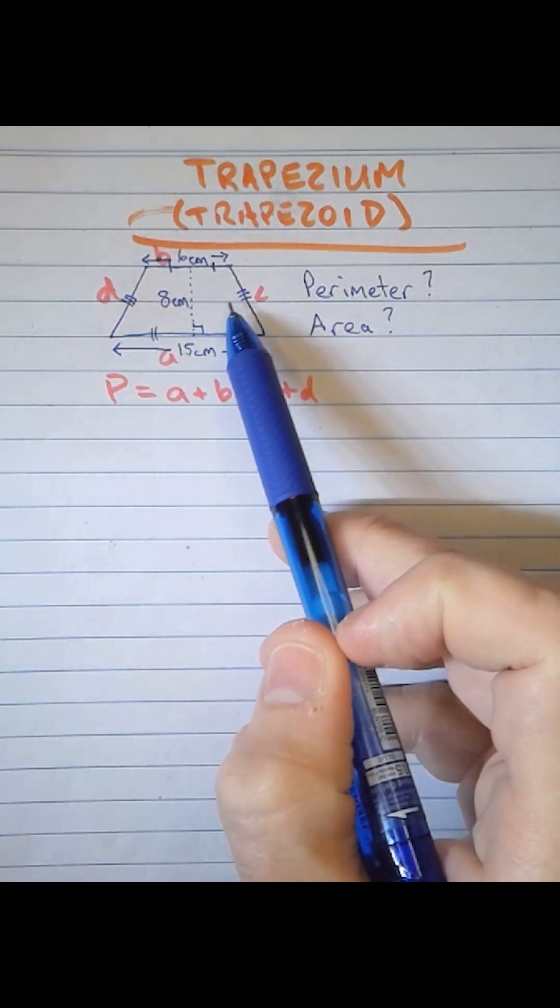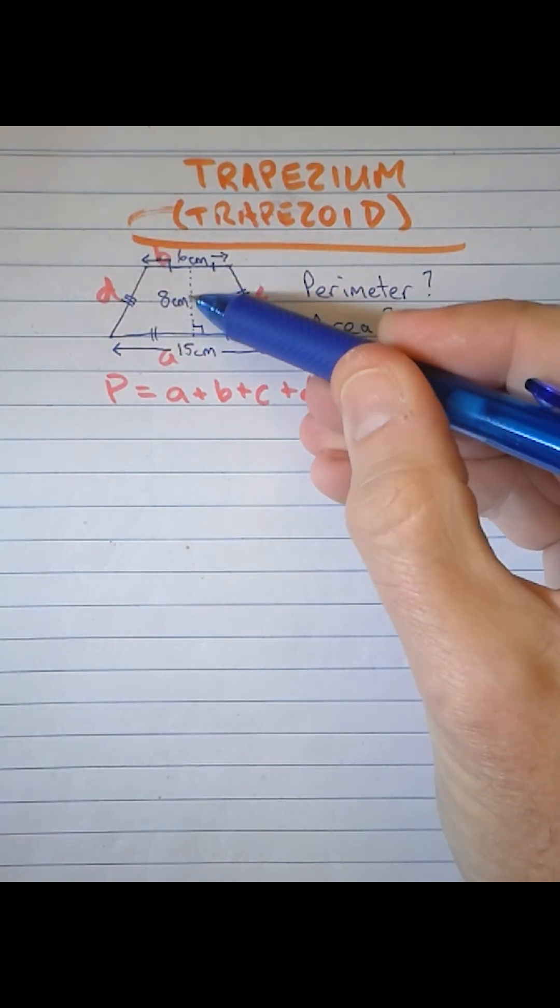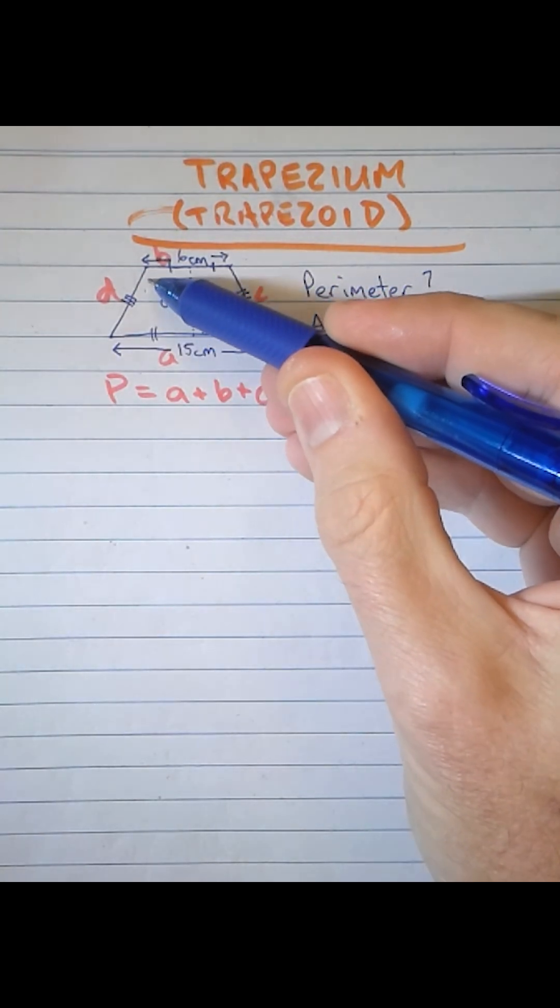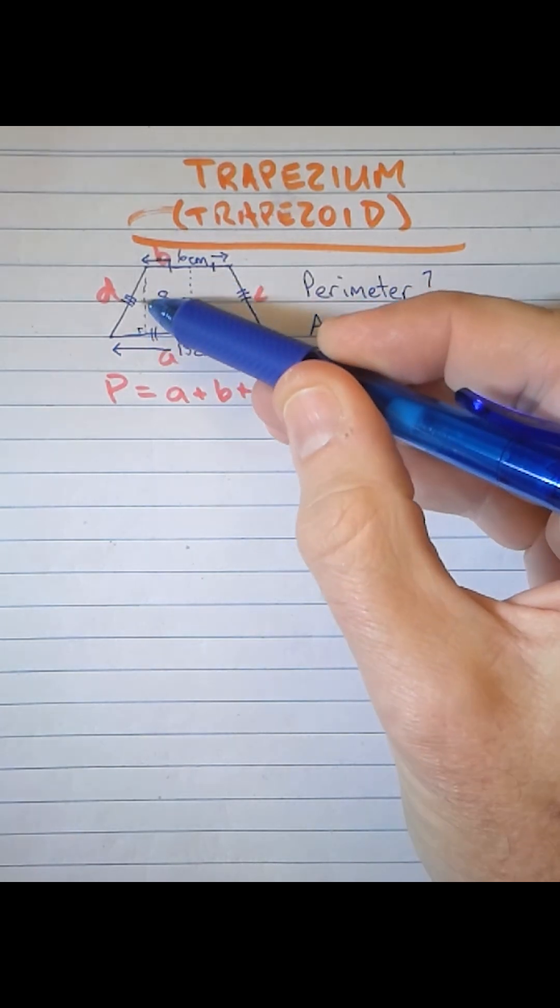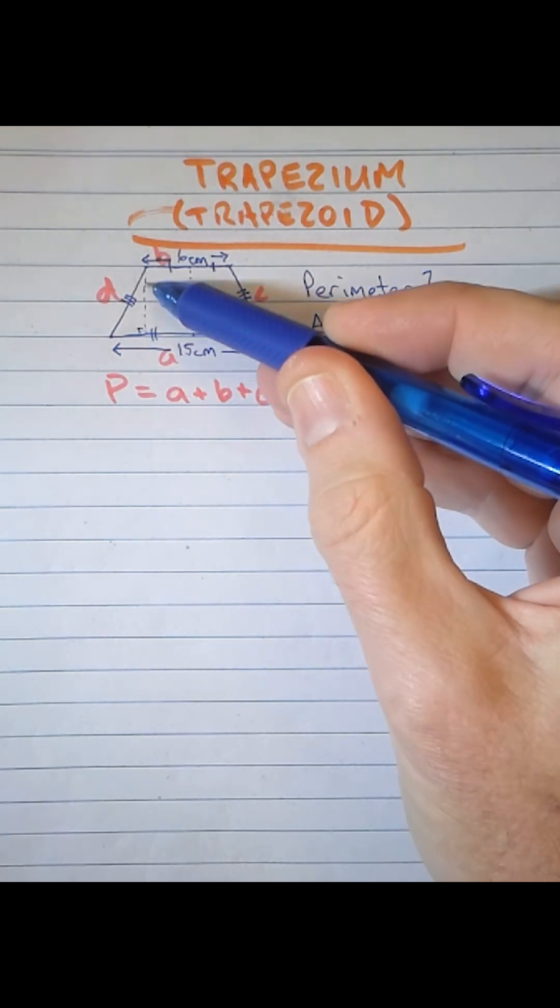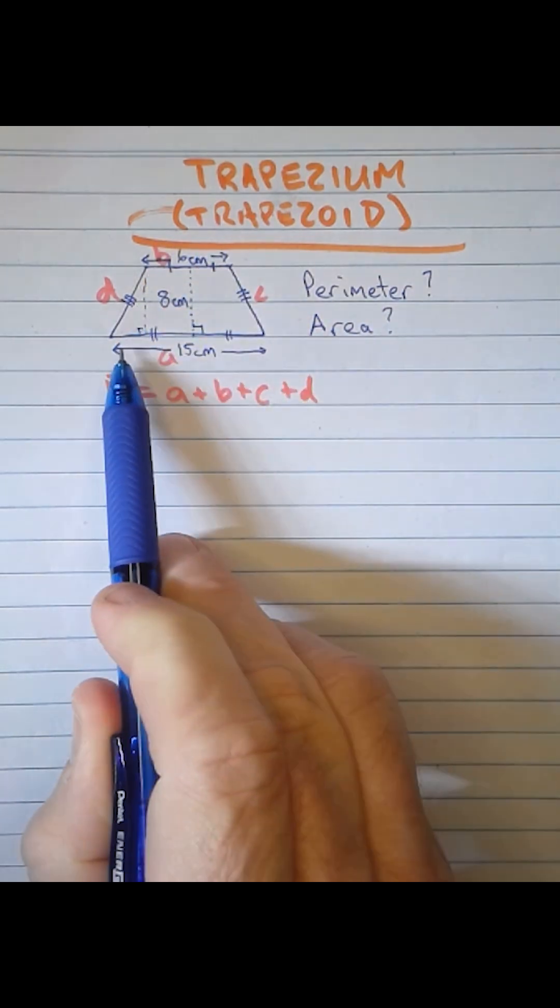You can see that we have these little three strokes, and that indicates that C and D are equal. If we translate the perpendicular line across here to the corner, we can form a right angle triangle with one side length 8cm, one side length D, the hypotenuse, and the base which we also don't know yet.